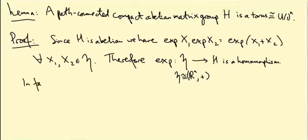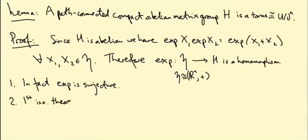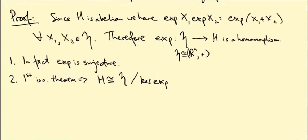In fact, exp is surjective — that's claim number one, which we'll prove. Let's defer the proof for a second and see why it's relevant. If it's surjective, we can use the first isomorphism theorem for groups, which tells us that the image — now the whole of H — is isomorphic as a group to h divided by the kernel of the exponential map. In other words, H is a quotient of Rⁿ by the subgroup ker(exp), and that's what allows us to identify H with U(1)^n.